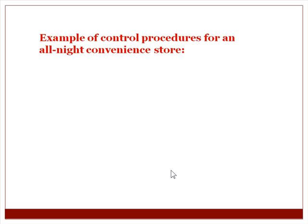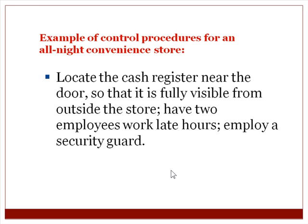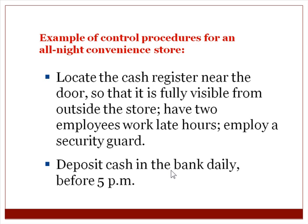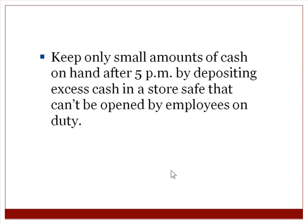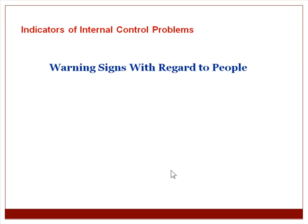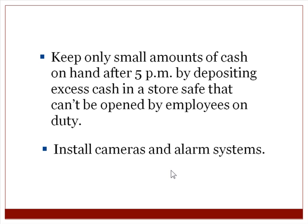Here's an example of control procedures for an all-night convenience store. You locate the cash register near the door so it's fully visible from outside, have two employees work late hours, and employ a security guard. Deposit cash in the bank daily before 5 p.m., keep only small amounts of cash on hand after 5 p.m. by depositing excess into a store safe that can't be opened by employees on duty, and install cameras and alarm systems. When you're talking about physical cash, these controls seem like common sense.